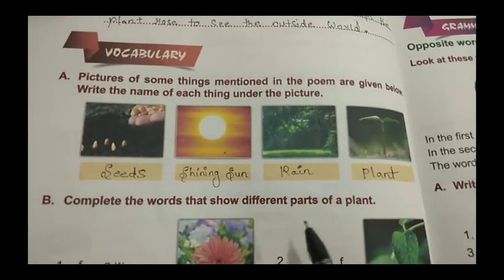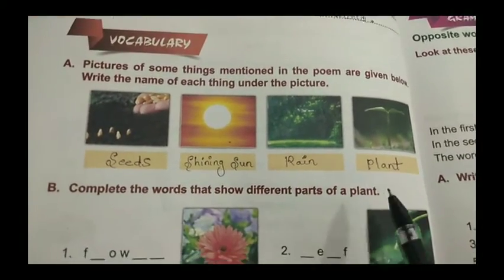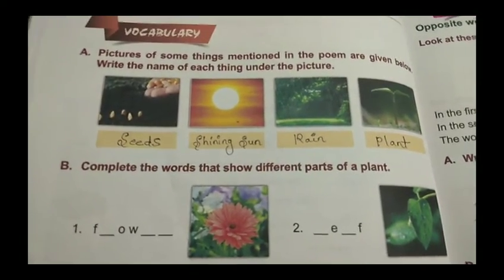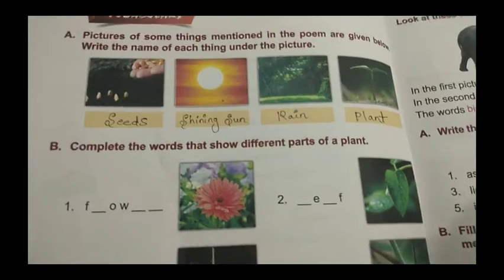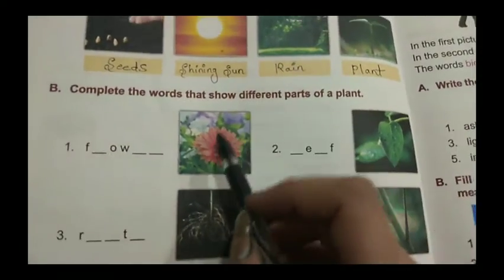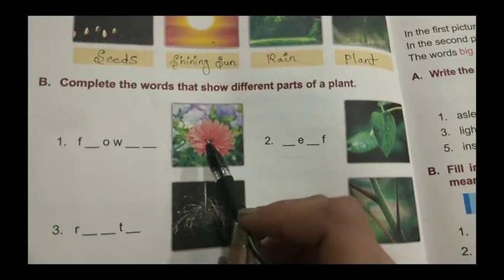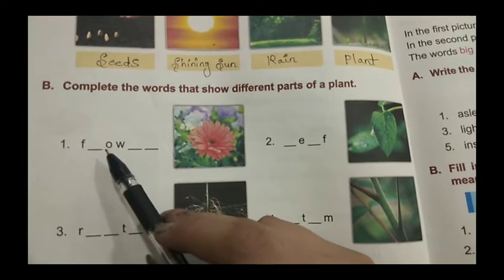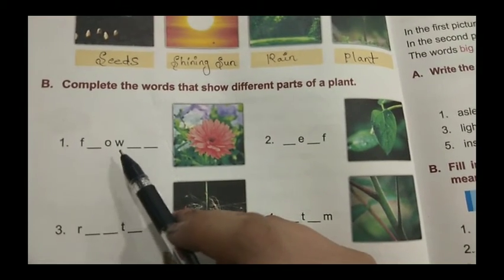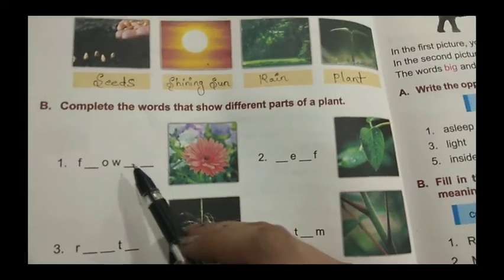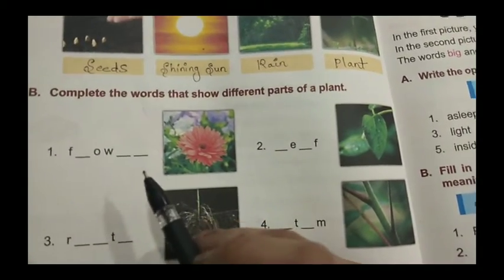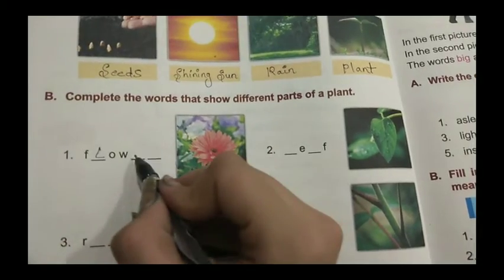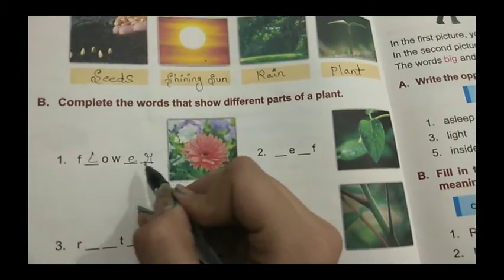Complete the words that show different parts of a plant. So now we have to complete these words which tell about the plant's different parts. In the first picture we see a flower. We will know what the spelling of flower is. So we will write here F, L, O, W, E, R — flower.